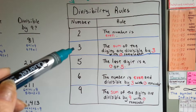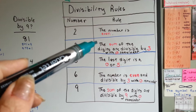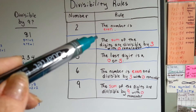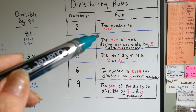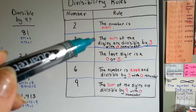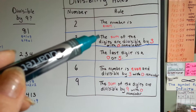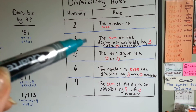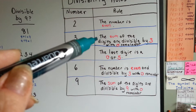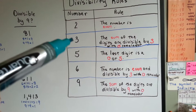I'll try to go slow so you can write these down. For the number 3, the sum of the digits — that means you're going to add the digits up — are divisible by 3 with a 0 remainder. So if you can add the numbers up, like 1,110 would be 1 plus 1 plus 1 plus 0, that would be 3, then it would be divisible by 3. If the sum of the digits are divisible by 3 with a 0 remainder, then you can divide it by 3.